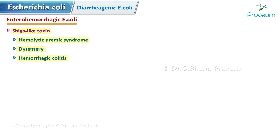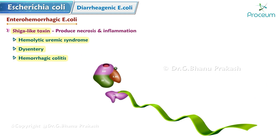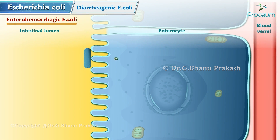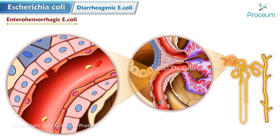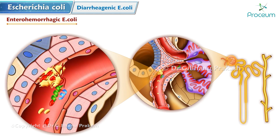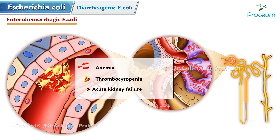EHEC contains a Shiga-like toxin that can cause hemolytic uremic syndrome (HUS), dysentery, and hemorrhagic colitis. The Shiga-like toxin alone is sufficient to produce necrosis and inflammation; it also inhibits the 28S rRNA on the 60S large ribosomal subunit, inhibiting protein synthesis in enterocytes. These toxins can systemically circulate and bind to the glomerular endothelium in the kidney, causing damage. This induces platelet aggregation, forming microthrombi that shear red blood cells and platelets, causing the HUS triad of anemia, thrombocytopenia, and acute kidney failure.